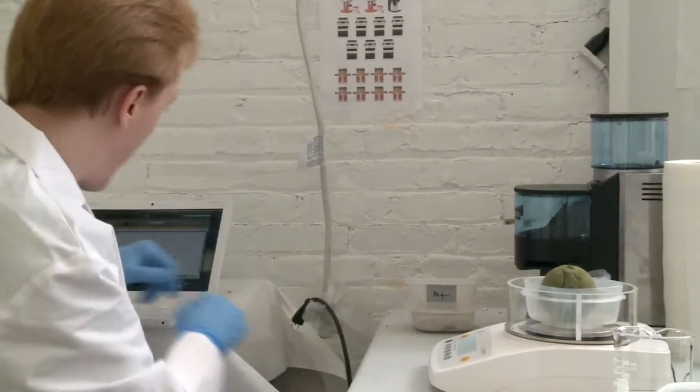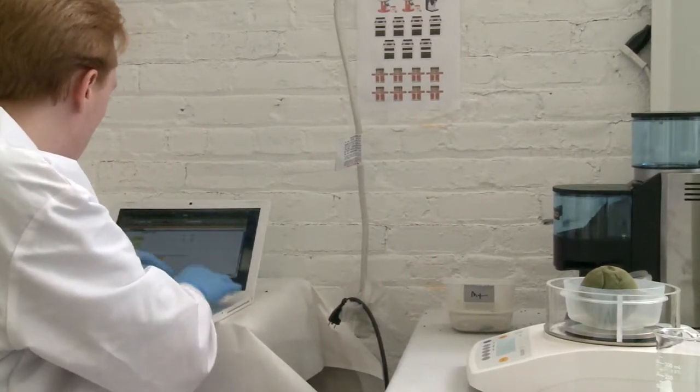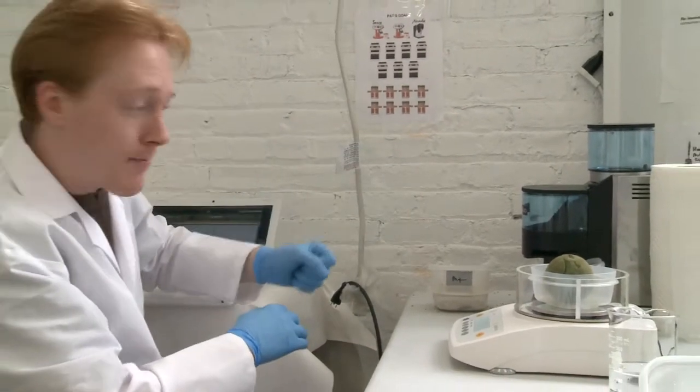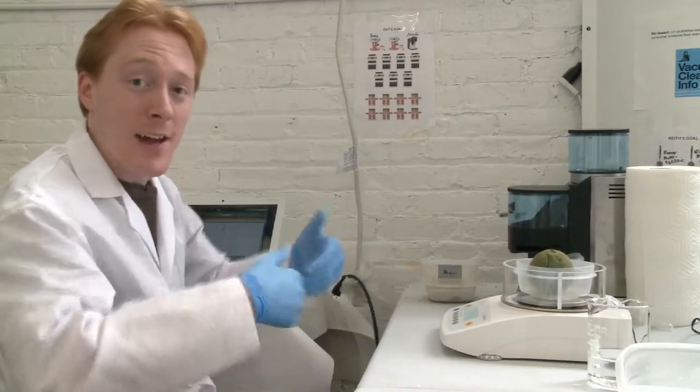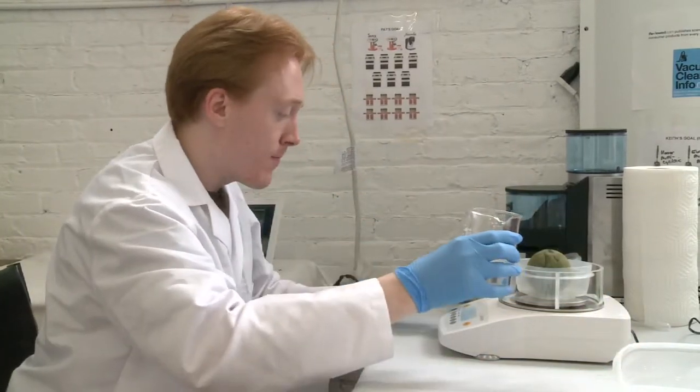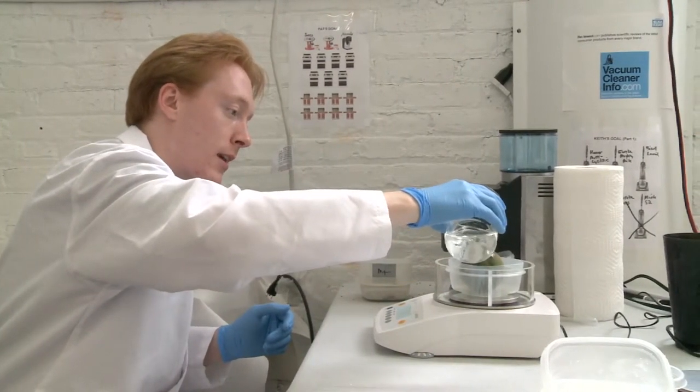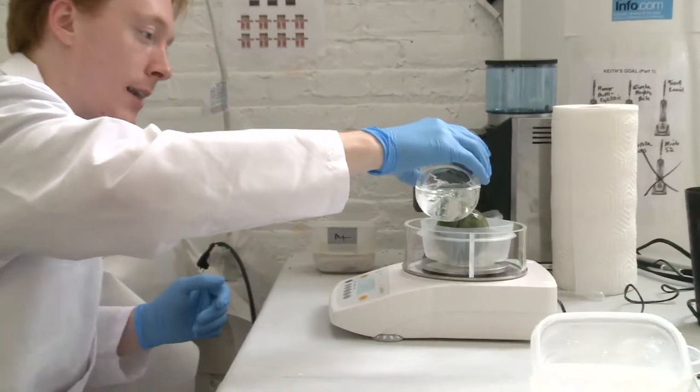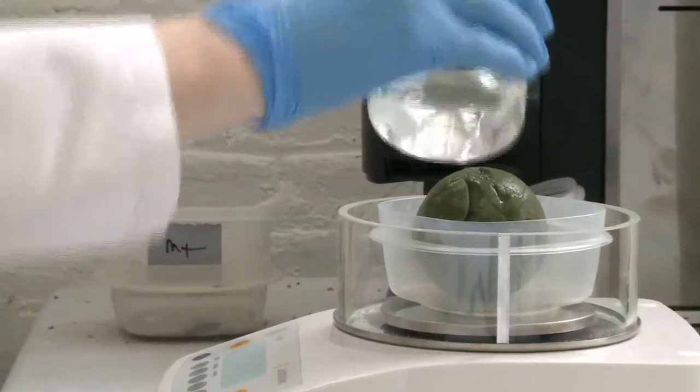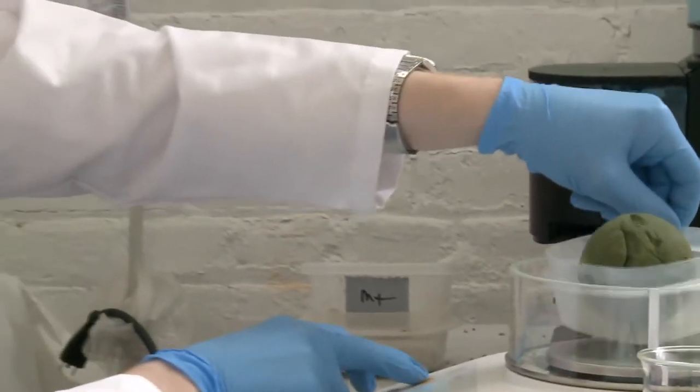We put that weight into our spreadsheets here and it will tell us how much water we need to add. For about five grams, we're going to add 50 grams of water - this regular tap water here. We reset the weight so we know how much we're adding, and very carefully we add the water. That's about 50.